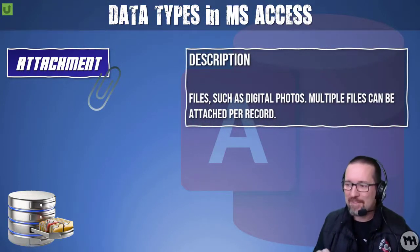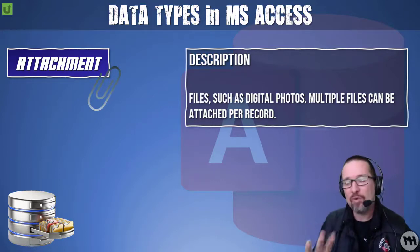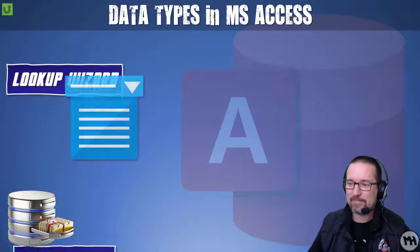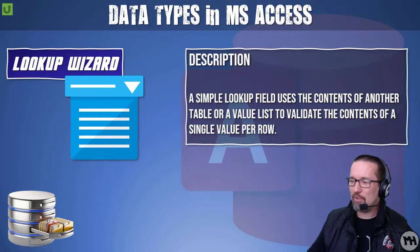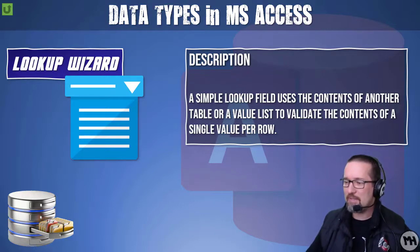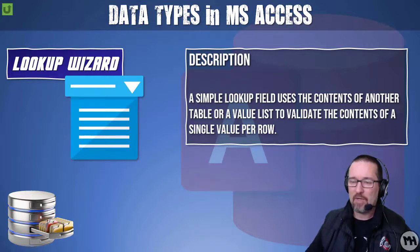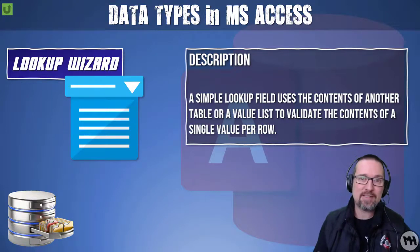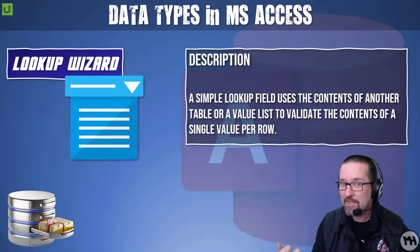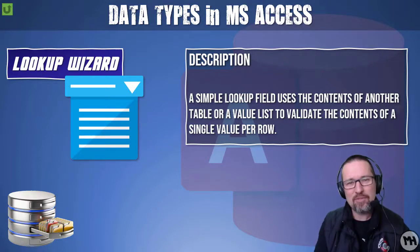An attachment is similar to OLE but links to a file such as a photograph, and you can have multiple attachments for one record. A lookup wizard creates a simple lookup field that uses the contents of another table or a value list to validate a single value per row — essentially a drop-down list of options. That list can either be one you've created for the field or it can look up a list from elsewhere, very similar to data validation in Excel.